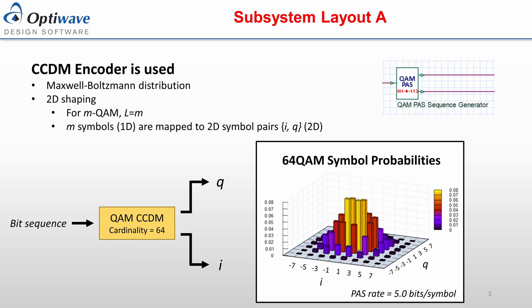After encoding, these symbols are each mapped to a symbol pair, where the symbol pair is output as the in-phase and quadrature symbols. The figure displays a probability distribution chart for a shaped 64 QAM signal, where the low-powered symbols have a larger probability than the high-powered symbols.